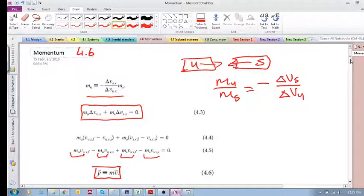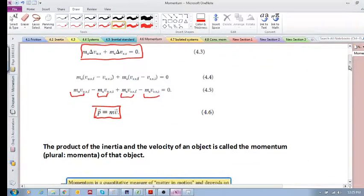Plus the final momentum of the standard minus the initial momentum of the standard. This is obviously known as momentum, and it is the product of the inertia, the mass, and the velocity.